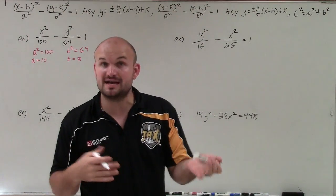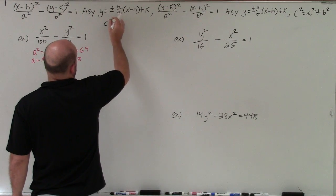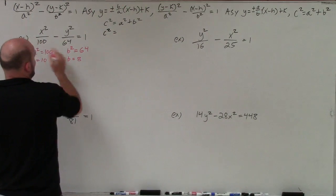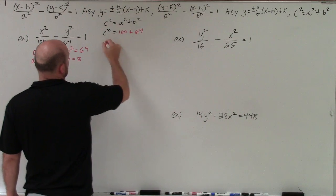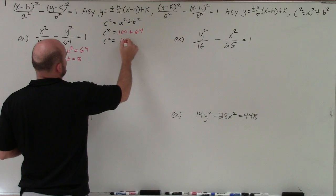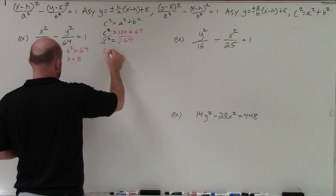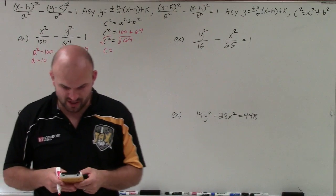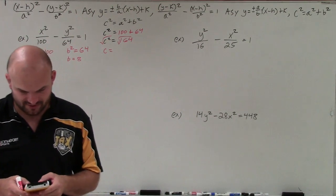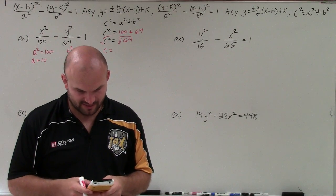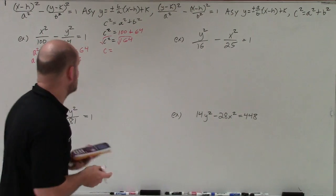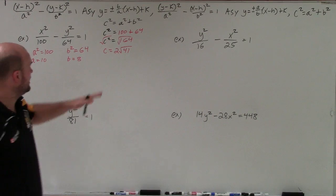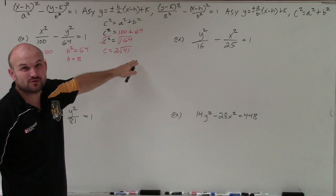To determine the distance from the center to the foci, we need to find c using c squared equals a squared plus b squared. Plugging in: c squared equals 100 plus 64, so c squared equals 164. Taking the square root, I need to simplify — 164 equals 4 times 41, so c equals 2 times the square root of 41, since I can't simplify the square root of 41 further.